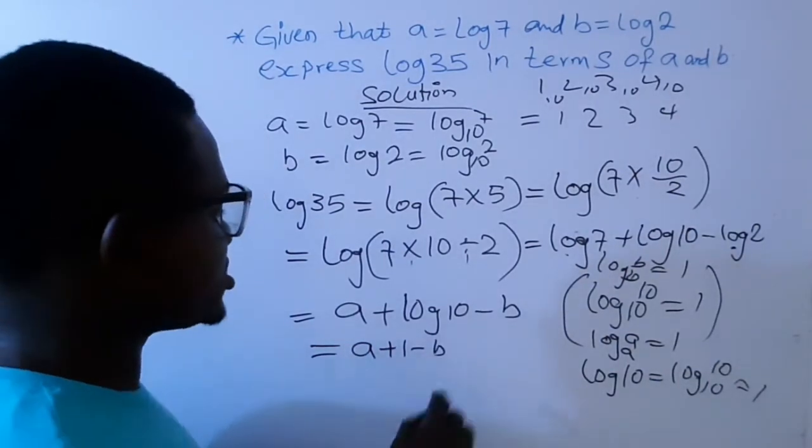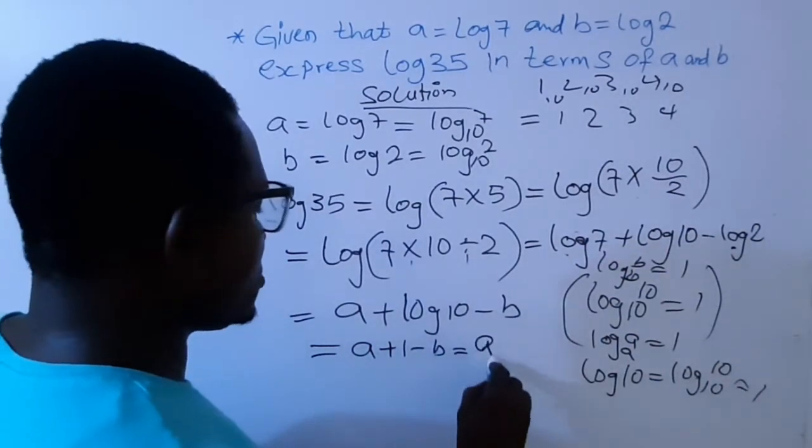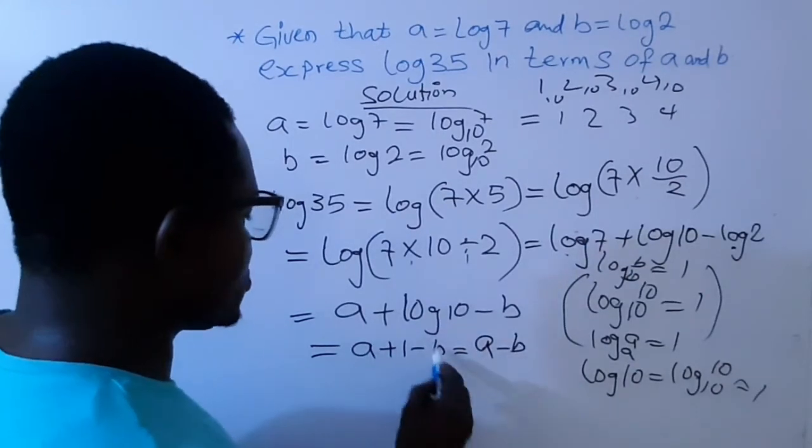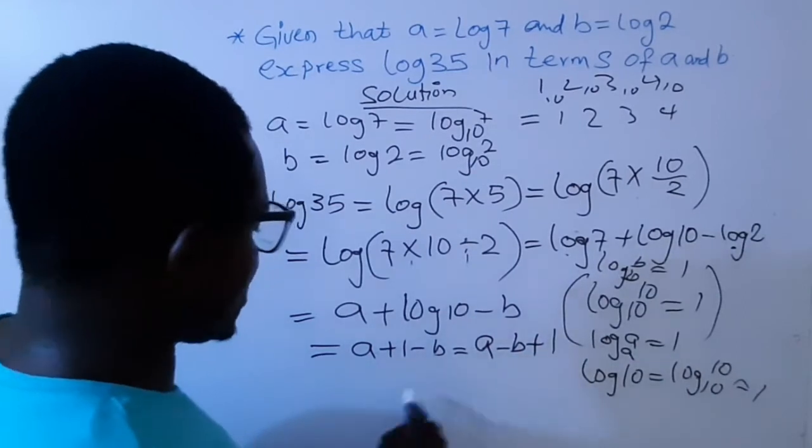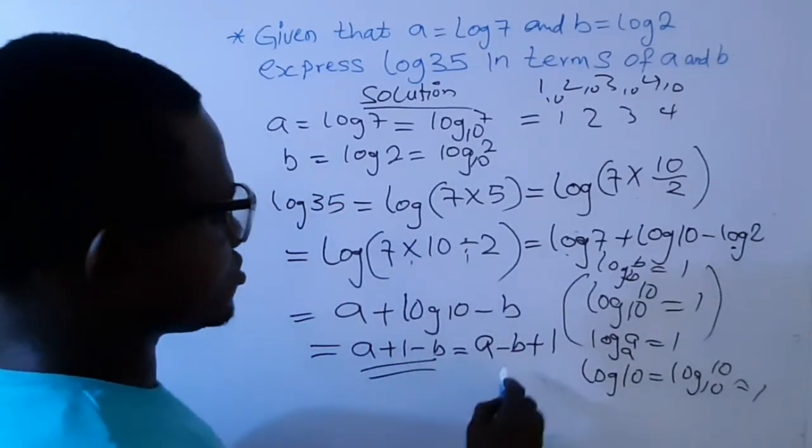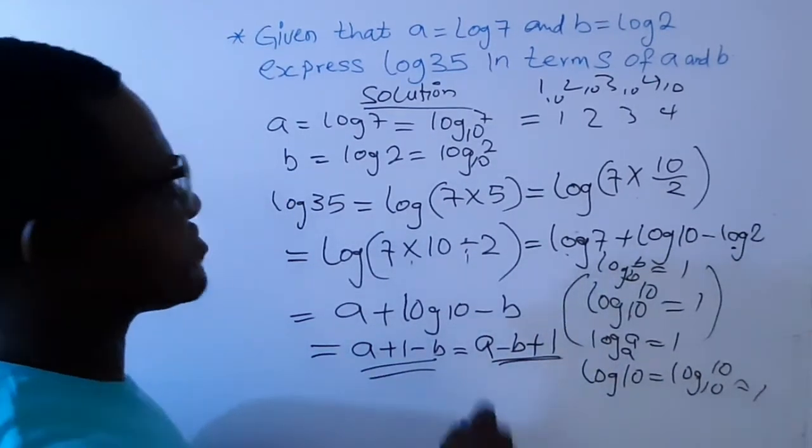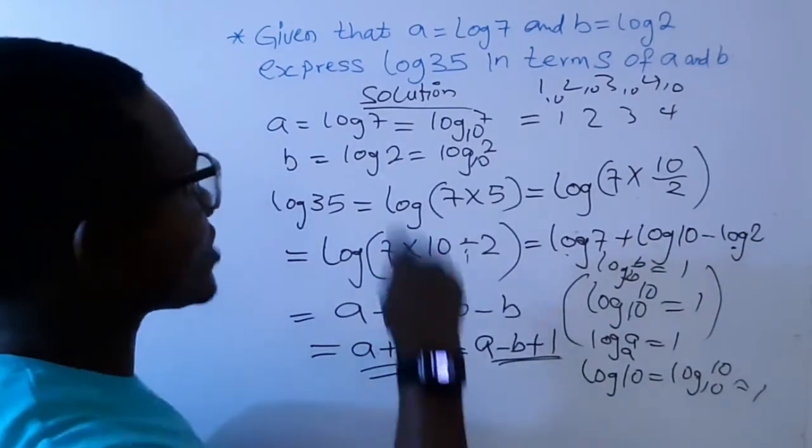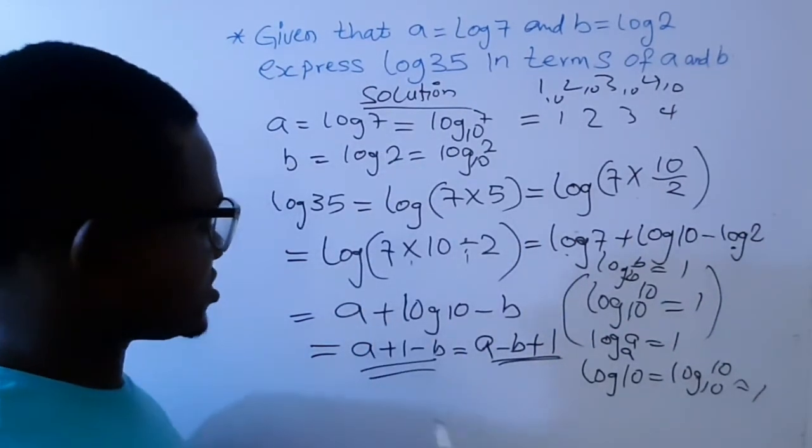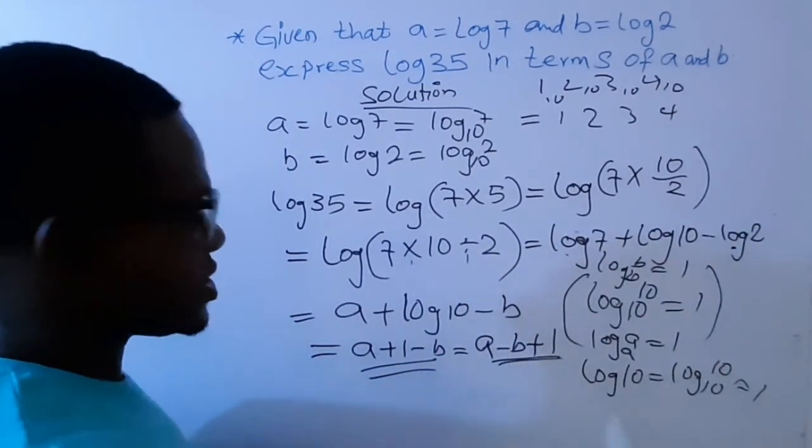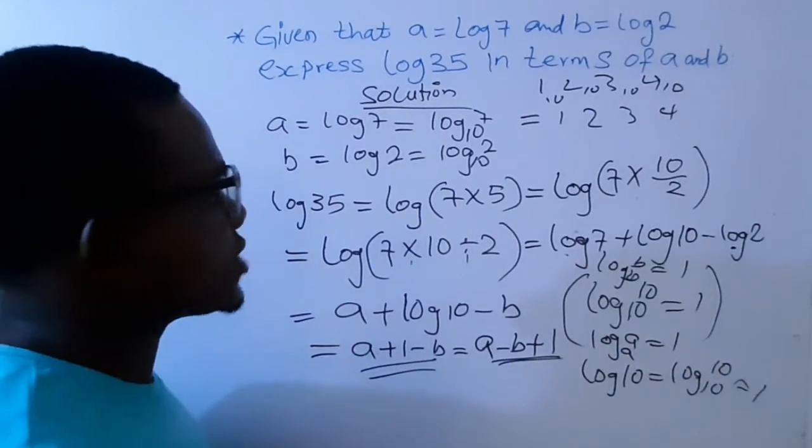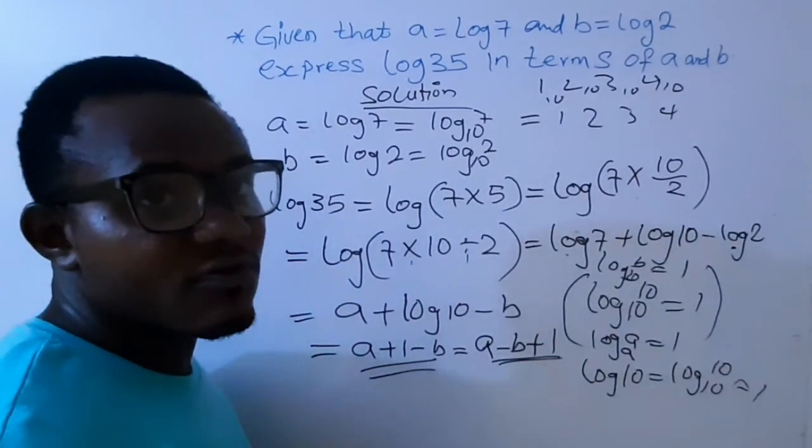So this is my answer. You can rearrange this by saying A minus B plus 1. So you can either leave it as this, or you leave it as this. So if it is an objective question, you look for the option. If it is this, you can find the option, you pick it. So that is how you solve this type of question.